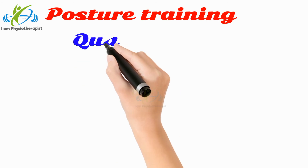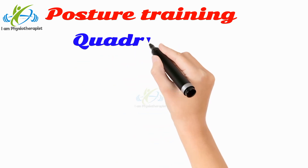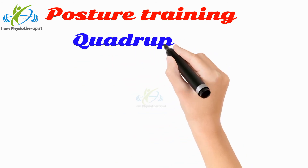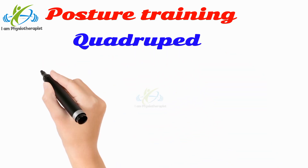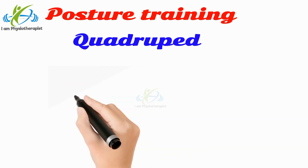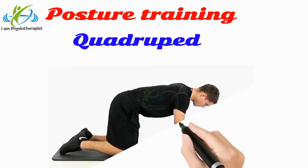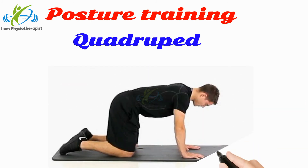Quadruped position: This position focuses on improving trunk, lower extremity, upper extremity, and neck or head control, and improving hip, shoulder, and elbow stabilizers.